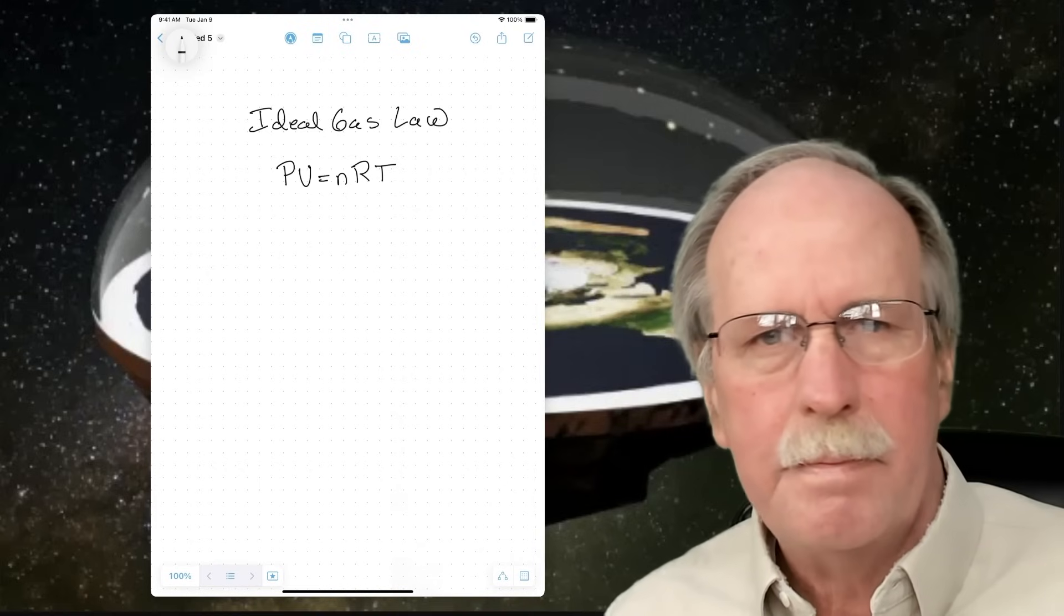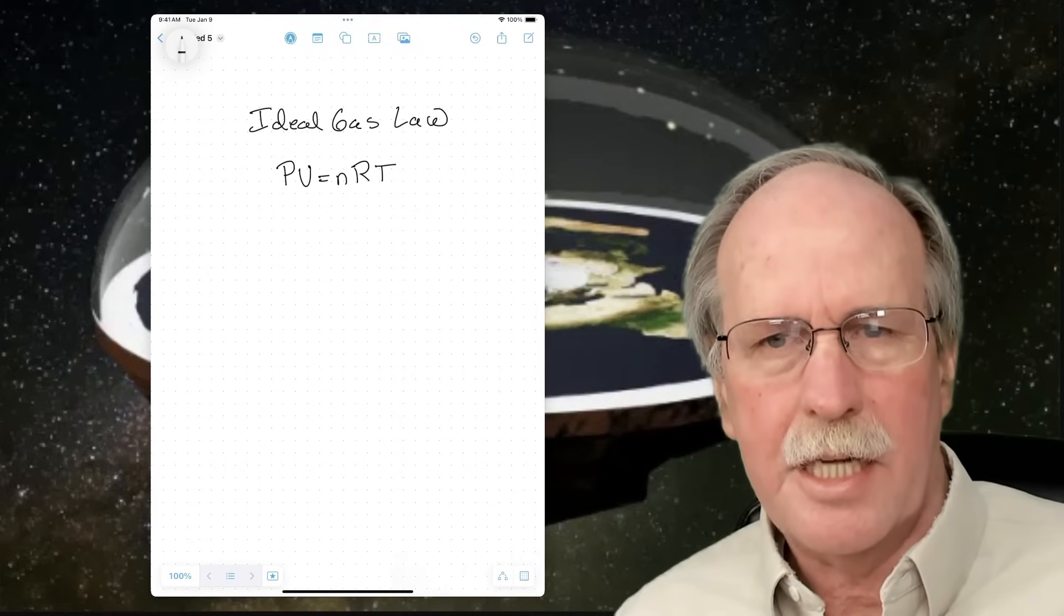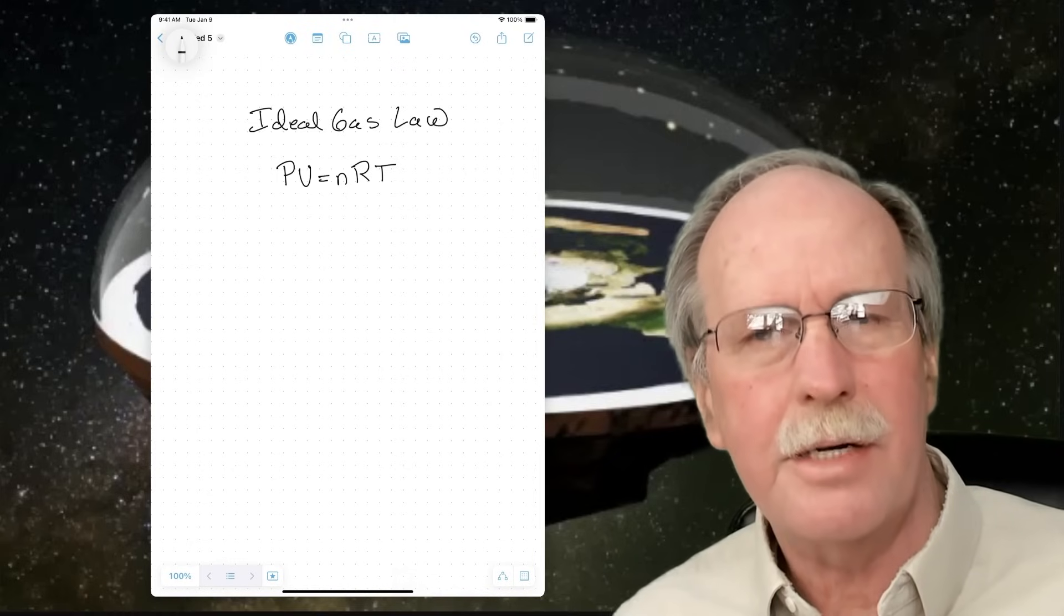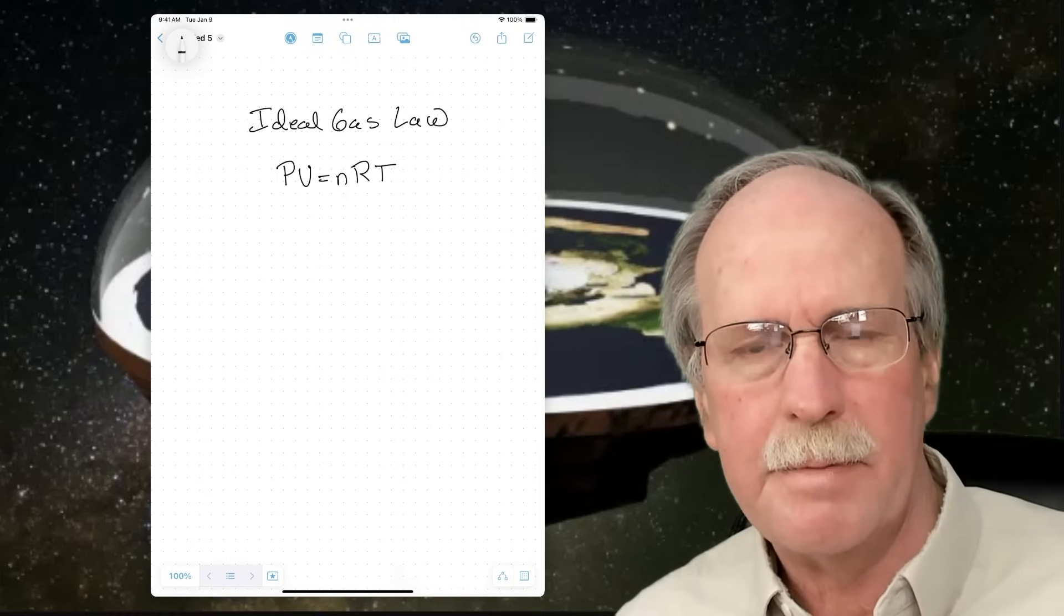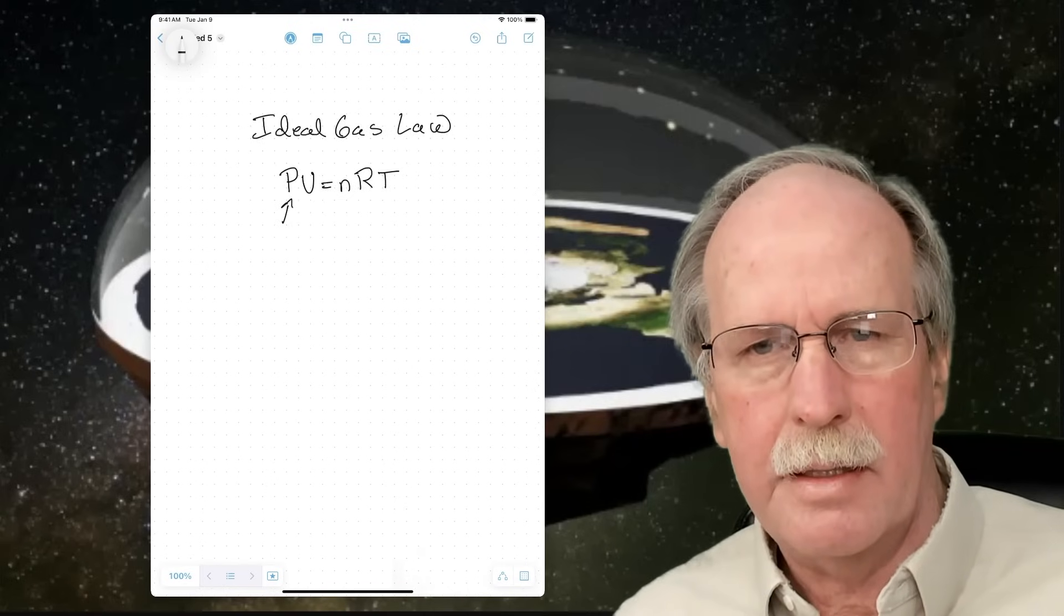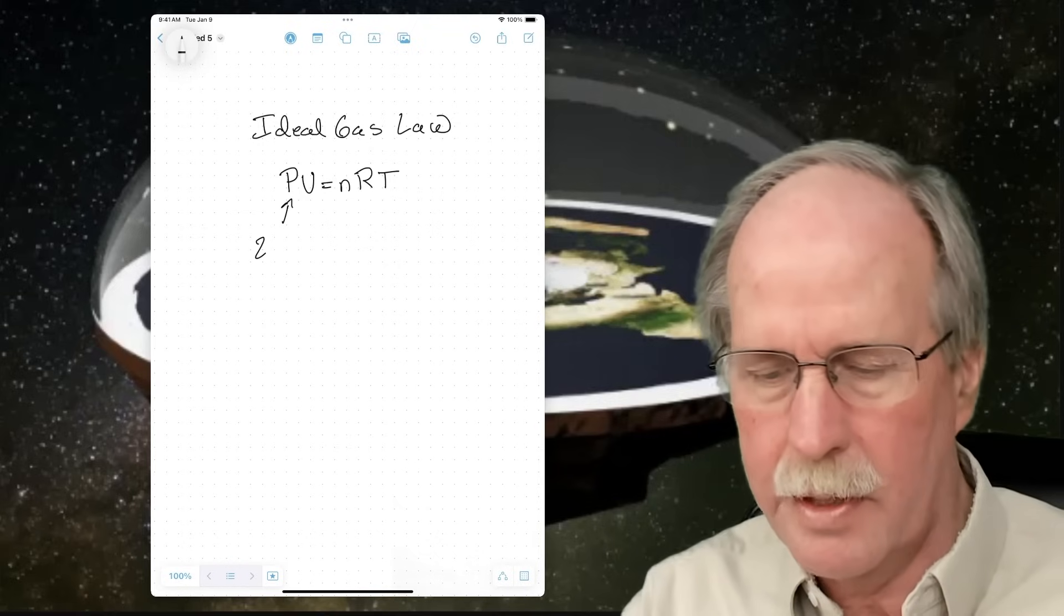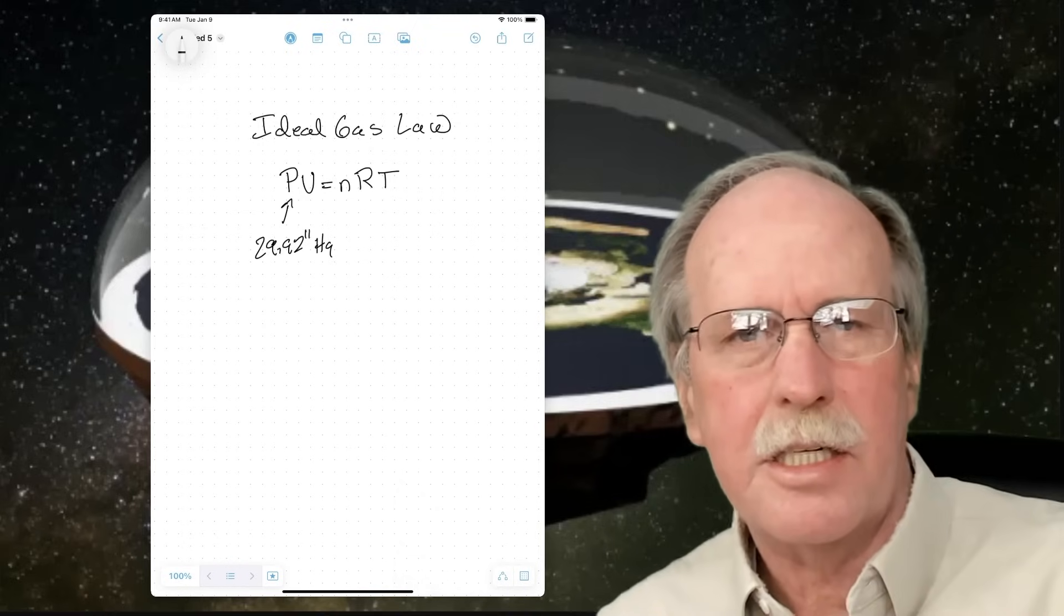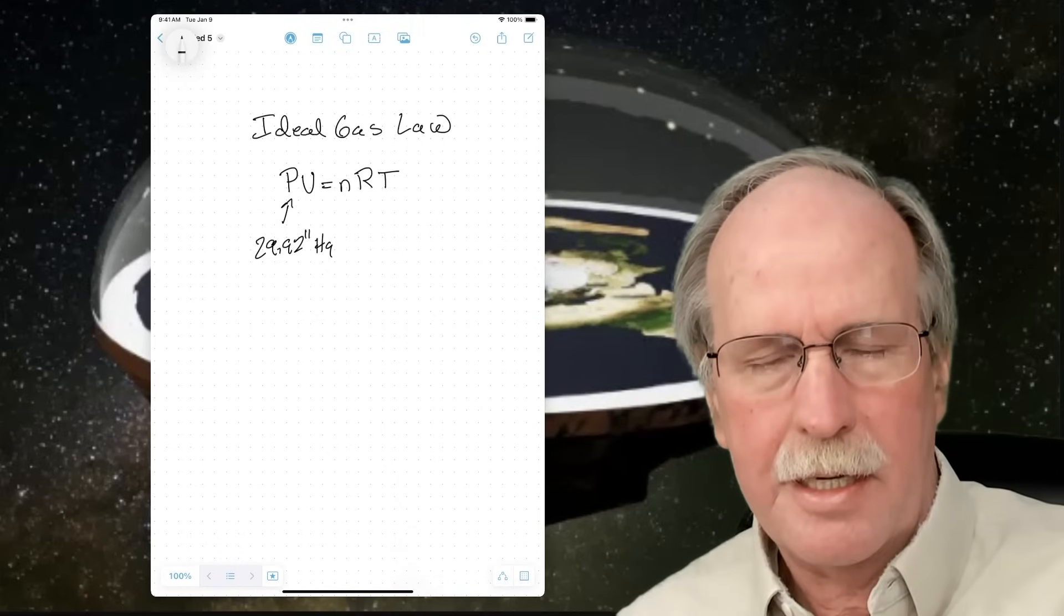So here is the ideal gas law. Pressure times volume equals nRT. Now n is the number of moles. R is the gas constant. Pressure, volume, and temperature, I think, are pretty self-explanatory. You can use any unit of pressure that you want. For example, I'm going to use 29.92 inches of mercury. That's a standard atmosphere under standard conditions.